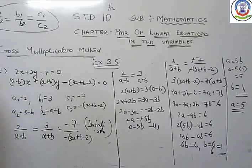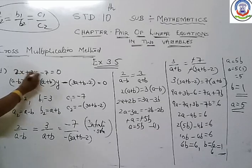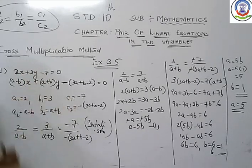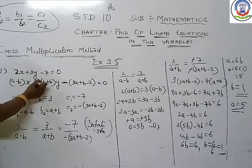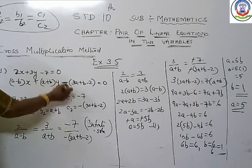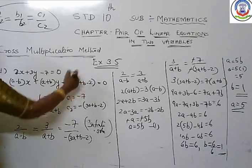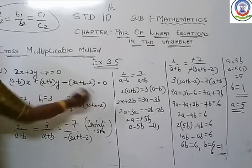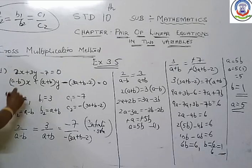Now the equation is in standard form ax + by + c = 0. Separate the coefficients: a1 = 2, b1 = 3, c1 = −7 for the first equation. For the second equation: a2 = a − b, b2 = a + b, and c2 = −(3a + b − 2), that is the full constant.